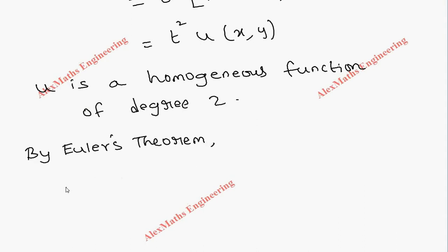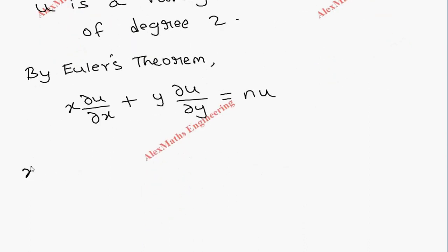Therefore, by Euler's theorem, the first statement is: x times partial u by partial x plus y times partial u by partial y equals n times u.